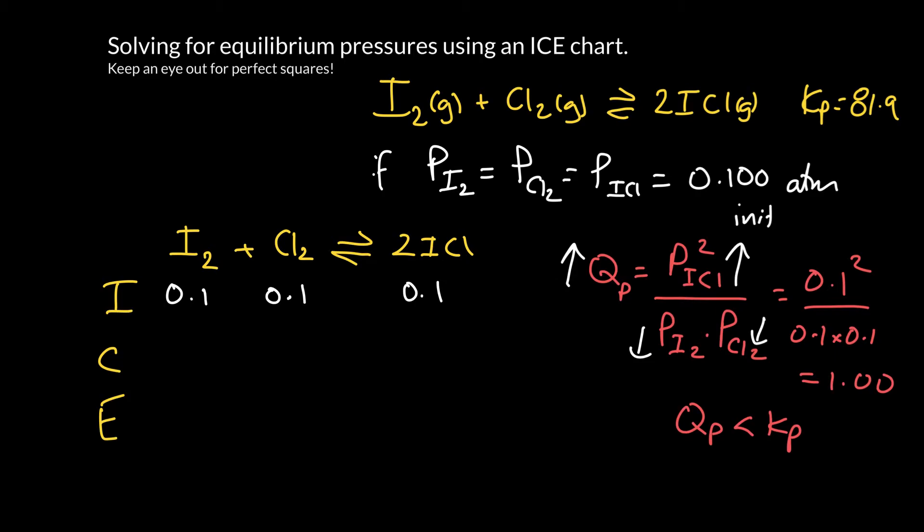So in terms of the equilibrium, if we're making more ICl, that means that we are going from left to right. So our change then, we're going to be using up from the left, and we're going to be going to the right. And do you see my mistake? Yeah, I got the direction of change, but remember I'm making two ICl's, so I have to put a 2 in front of my X there, because whatever I2 goes down by, ICl goes up by twice that value.